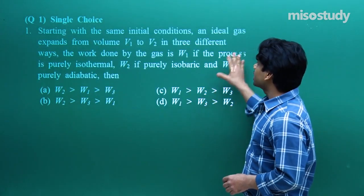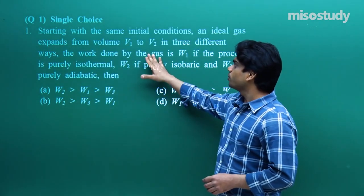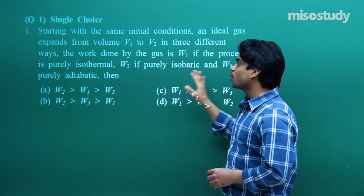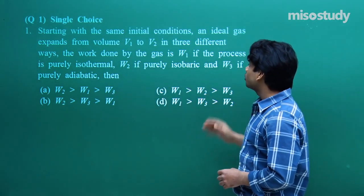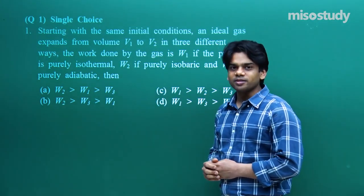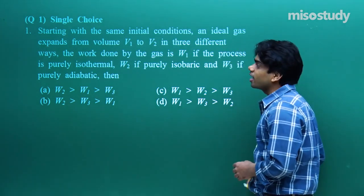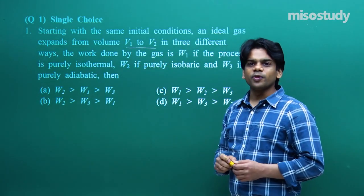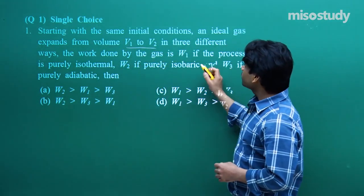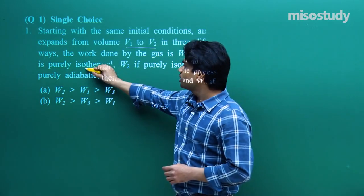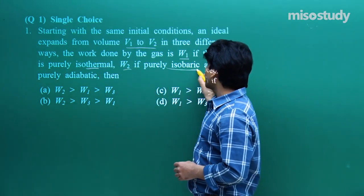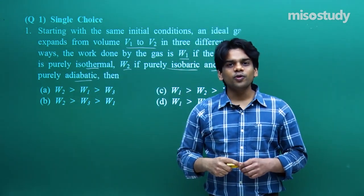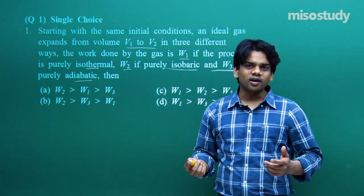Starting with the same initial conditions, an ideal gas expands from volume V1 to V2 in three different ways. The work done by the gas is W1 if the process is purely isothermal, W2 if purely isobaric, and W3 if purely adiabatic. We want to see in which case the work done is maximum and how the work done is related across all three scenarios.